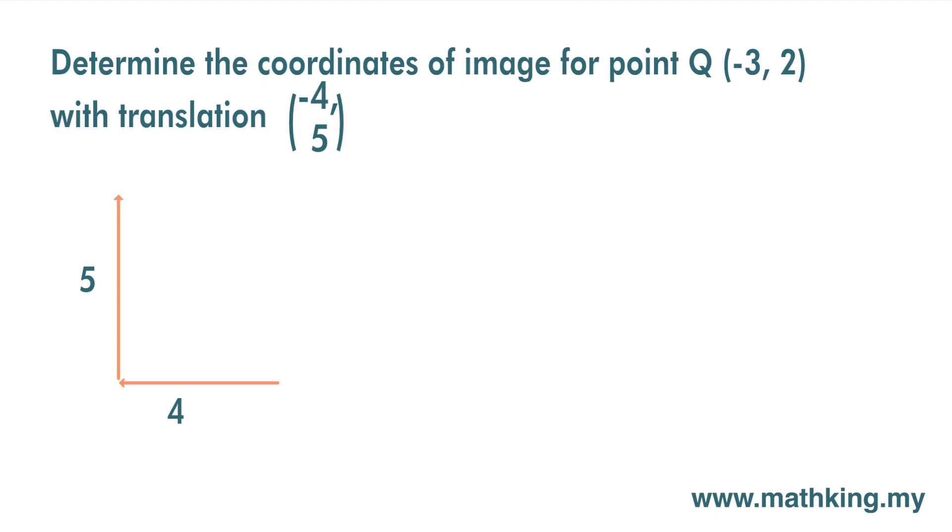Or we can simply get the coordinate of the image by adding the coordinate with the vector. So -3 + (-4), we get -7. 2 + 5 is 7. So the coordinate of this image, Q', is (-7, 7).